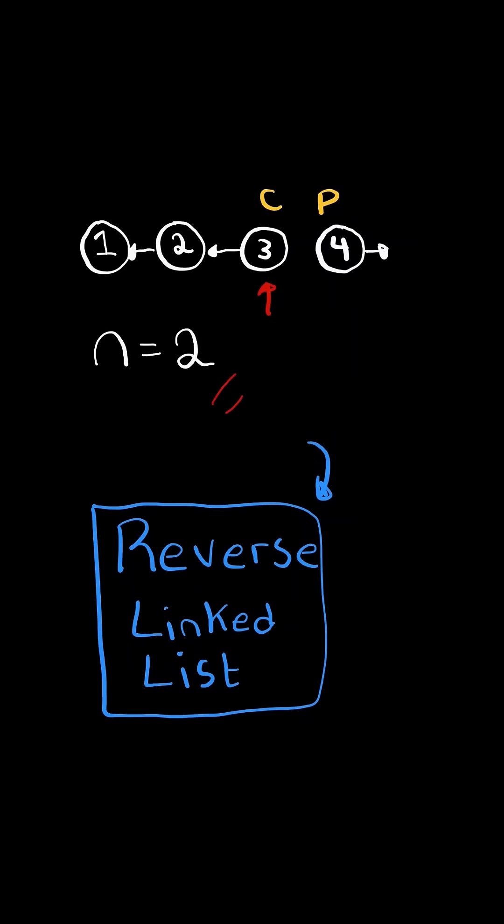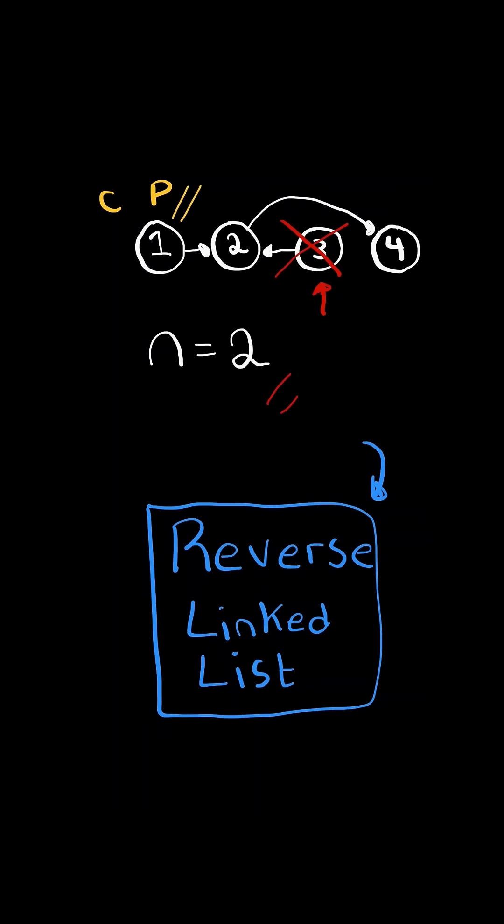But now current points to the second element, so we skip over it by advancing current, and set the current.next to previous. At the end, we return previous.